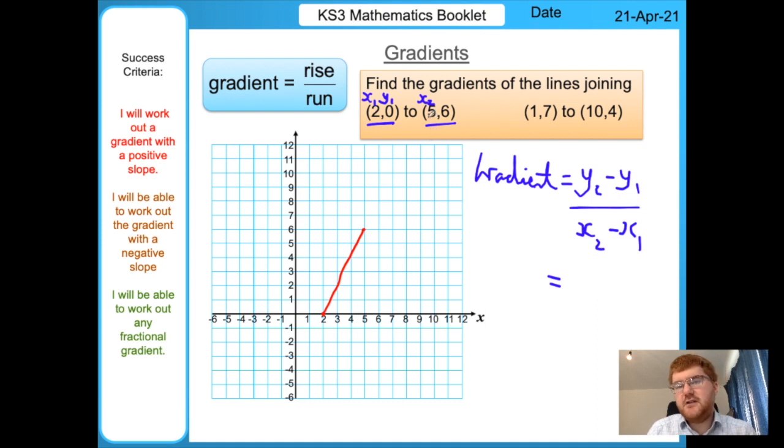We label our coordinates. This is our first coordinate, so this is x1, the x-coordinate of the first point. This is the y-coordinate of the first coordinate. This will be x2, the x part of the second coordinate, and this is y2, the y part of the second coordinate.